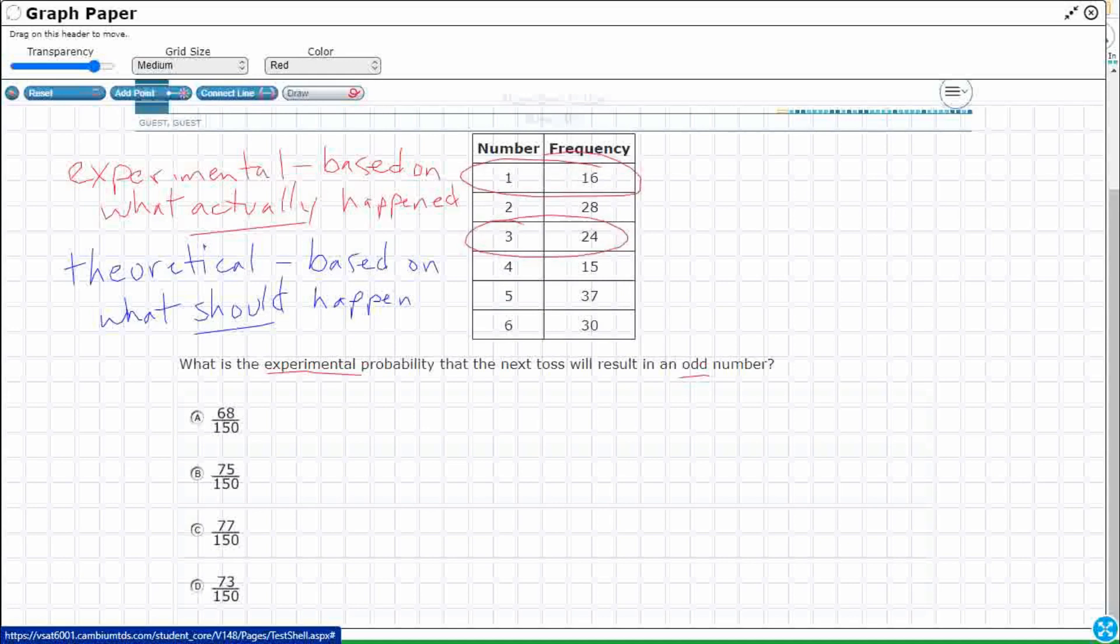So here are my odd numbers: 1, 3, and 5. So the results are 16, 24, and 37. So let's take a look at those real quick. 16, 24, 37. So if I land on any of the 1, the 3s, or the 5s, that is going to result in an odd number.